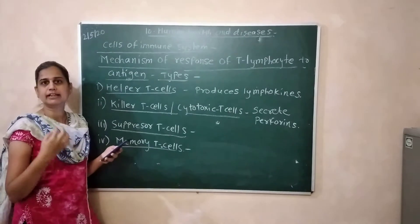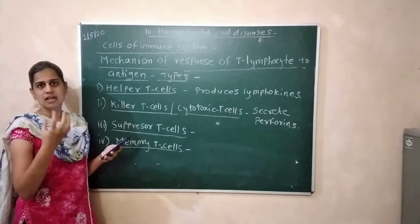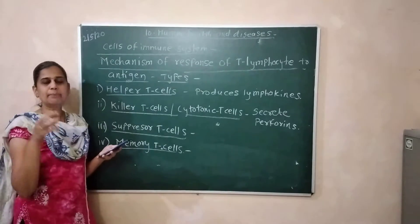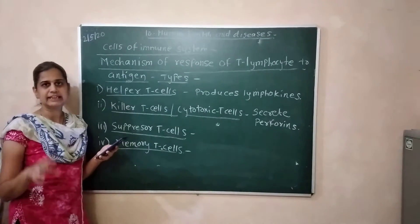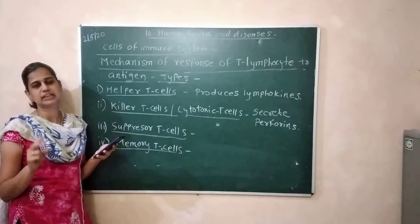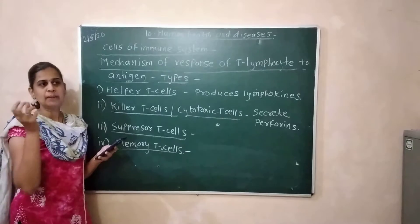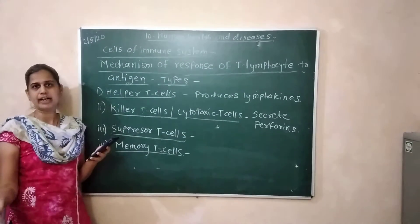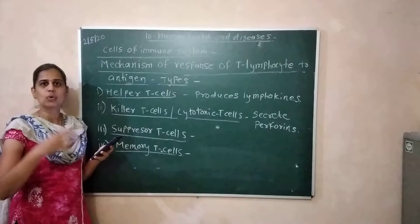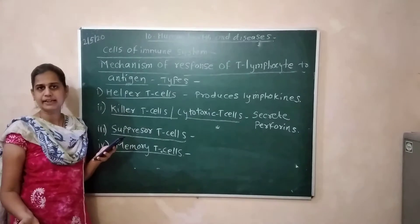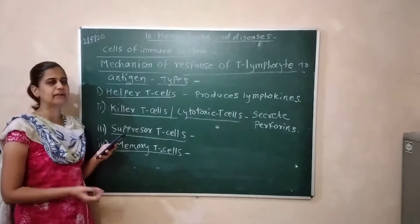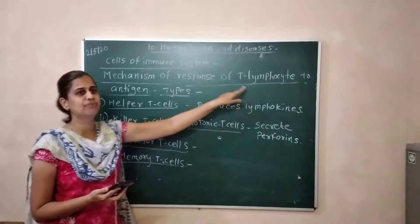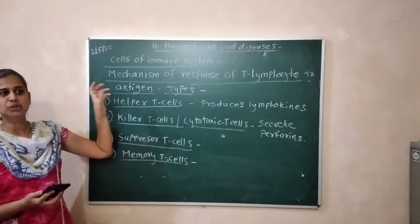We studied about lymphocytes and antigen presenting cells in the immune system. There are two types of lymphocytes: B-lymphocytes and T-lymphocytes. What is the mechanism of response of T-lymphocytes to antigen?